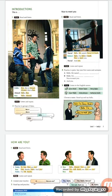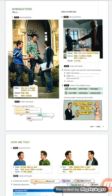'Nice to meet you' — Read and listen. Tapescript 1.4: 'Hello, my name's Judy Koblenz.' 'Hello, I'm Robert Smith.' 'Nice to meet you.' 'And you.' 'Nice to meet you' means 'أنا سعيد بأن أتعرف عليك' — I'm pleased to meet you. It is used at the end of an introduction between two people.